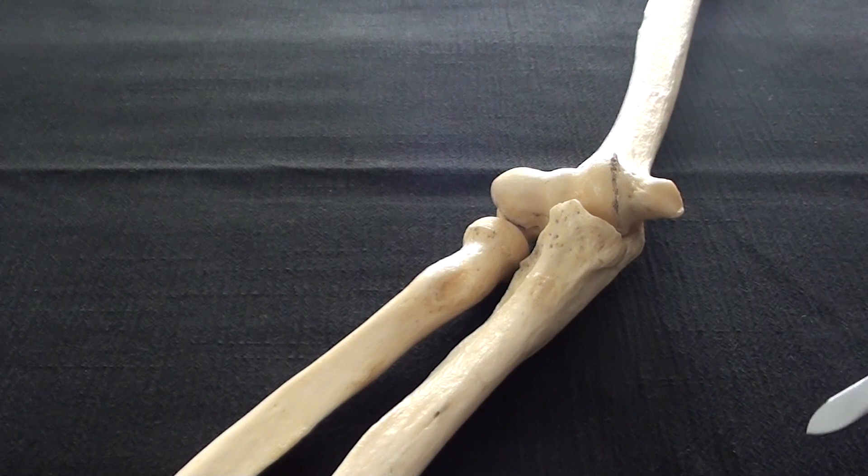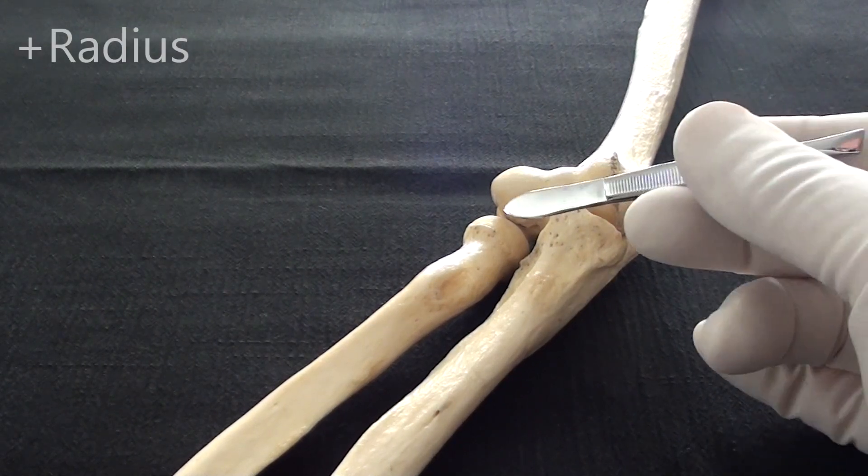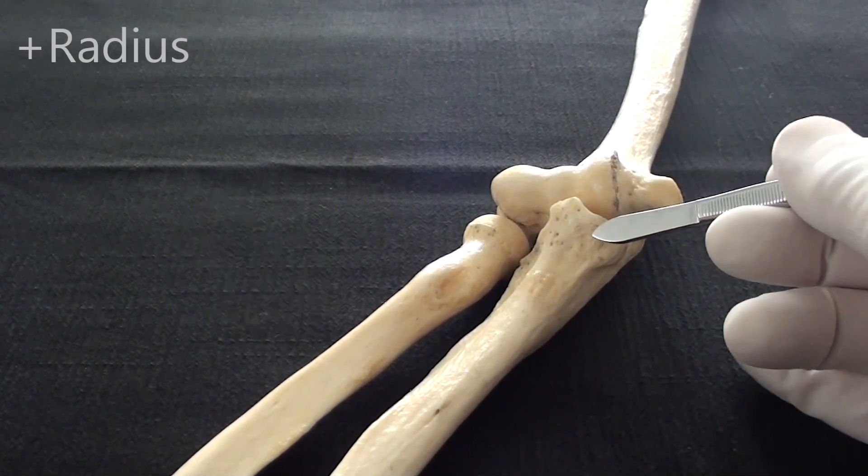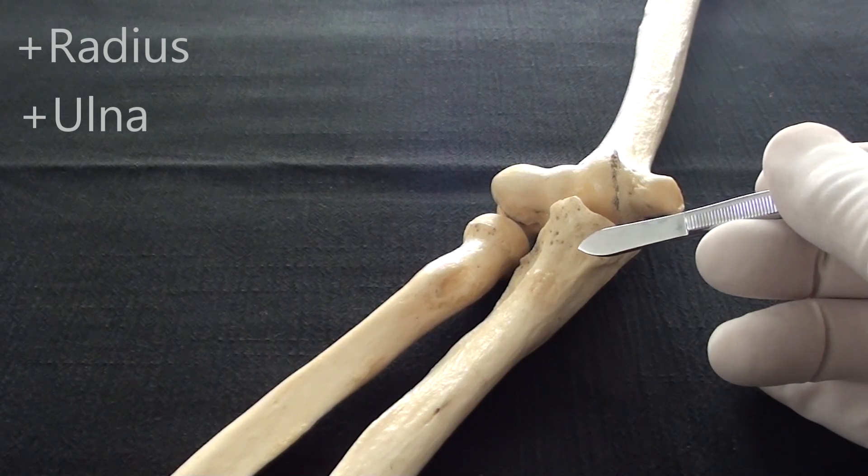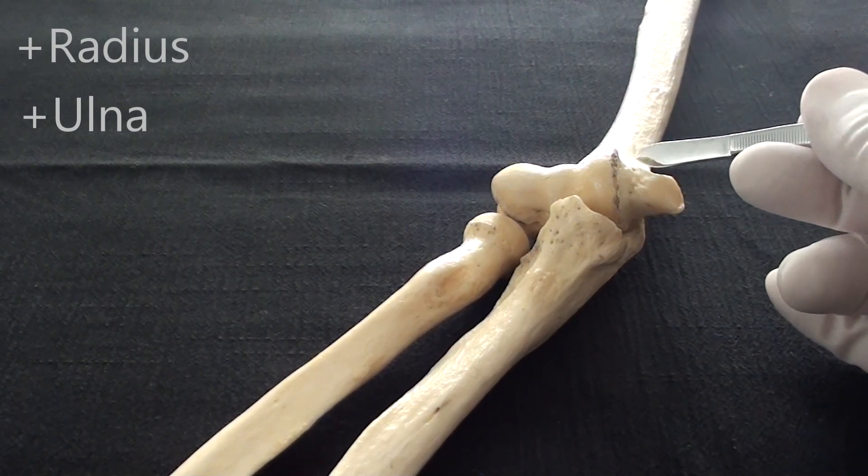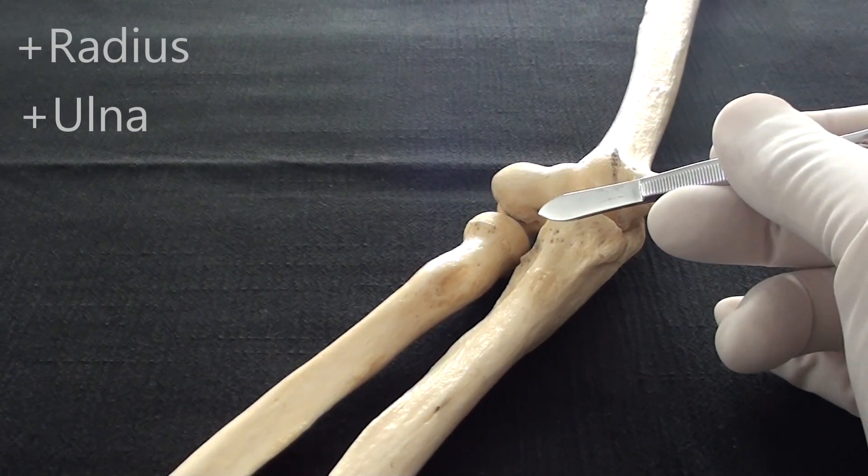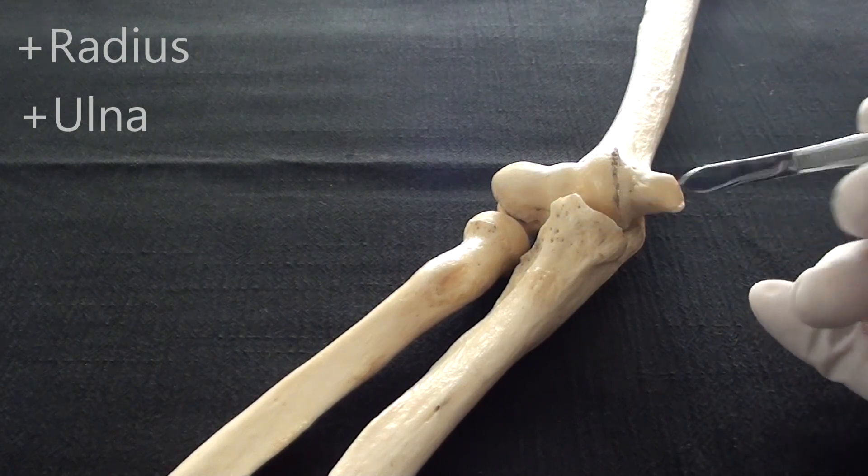There are two bones of the forearm: the radius, which is located laterally, and the ulna. Both bones are illustrated here together with the right-sided humerus and put together so that they resemble the elbow joint.